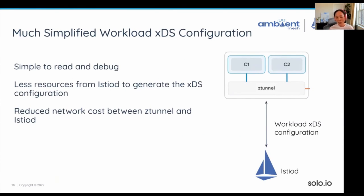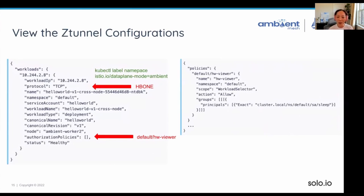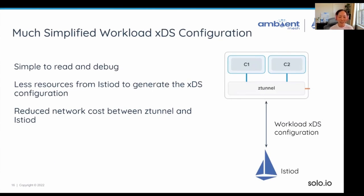This results in a much simplified workload XDS configuration that is so much simpler to read and debug — roughly 100x simplified compared to the old Envoy configuration. It also means far less work for istiod to generate the XDS configuration for ZTunnel, and reduces the network cost between ZTunnel and istiod.